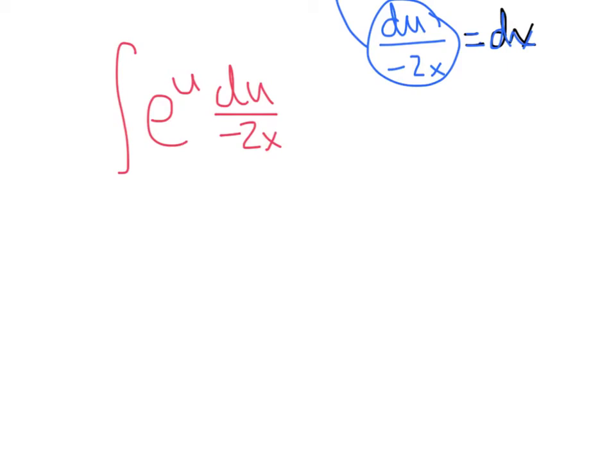So we have to say right now: we cannot do this integral with the rule we have tonight. We may learn tricks later to get around this obstacle, but right now we've hit a clear dead end. The x's don't cancel, and this is where we stop.